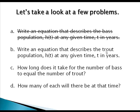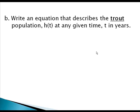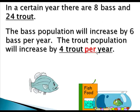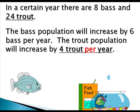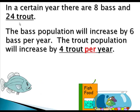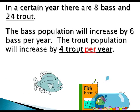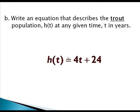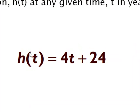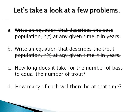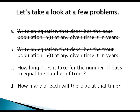For part B we do the same for trout. We start with 24 trout and the number of trout will increase by four per year. So again our output is h of t and our input is t for time. The only difference is we start with 24 trout and they increase by four every year.